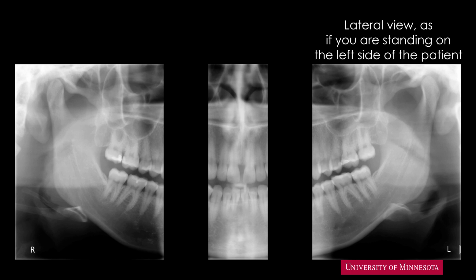Finally, we'll again consider the left posterior part of the jaws as a lateral view, as if this time we are standing on the left side of the patient. Remember that this is a rather simple explanation of the position of the anatomic landmarks for a very complex imaging technique. On this section, the cervical vertebra is on the right edge of the screen. By now, you may have realized that the cervical vertebra is recorded three times — once on the left edge, once on the center, and once on the right edge of the image.